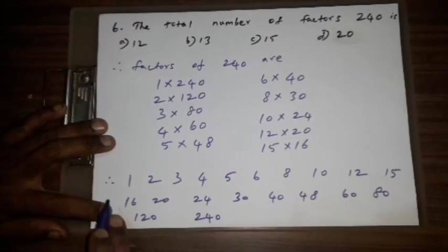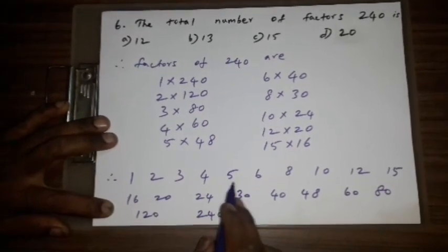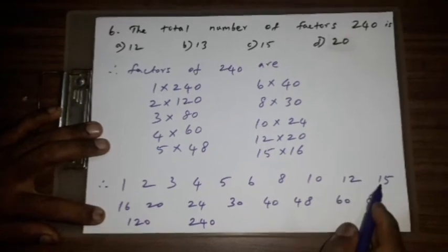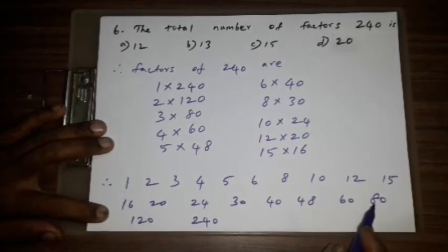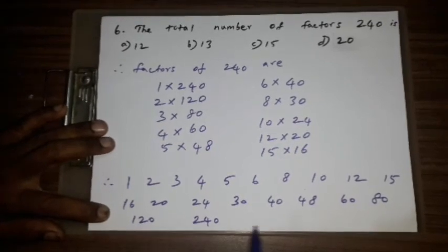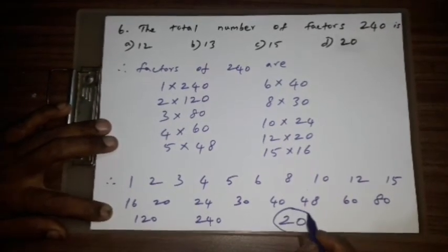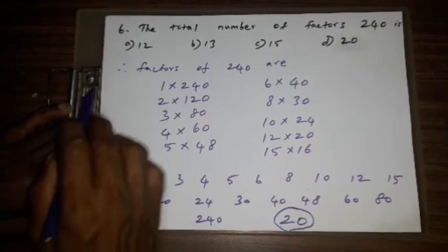Counting: 1, 2, 3, 4, 5, 6, 7, 8, 9, 10, 11, 12, 13, 14, 15, 16, 17, 18, 19, 20. D: 20 is the correct answer.